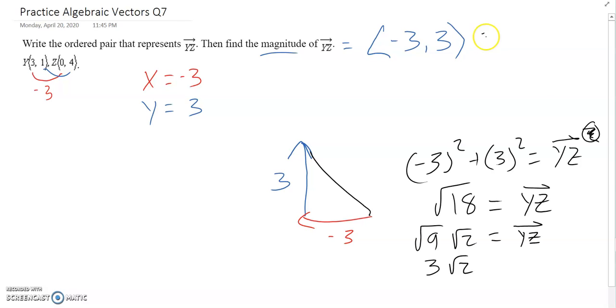So with a magnitude of 3 root 2, okay, I think that we have another problem very similar to this one, just asking for an ordered pair that represents it and magnitude.